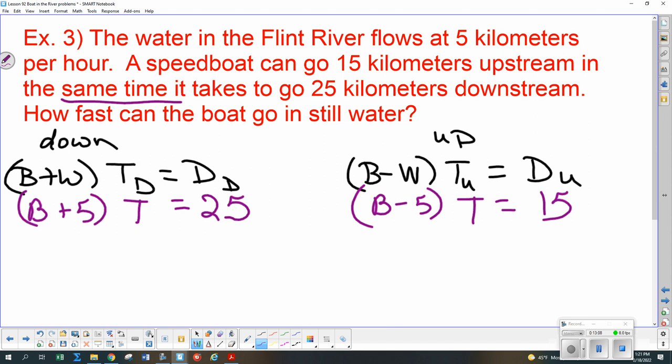What do you think we should do as the next step? Distribute. So we're going to have BT plus 5T is 25. And we're going to have BT minus 5T is 15. And I want you guys to go ahead and solve this one. Whichever way you think is best. Whatever you think you should eliminate first. And then we'll see if we all get the same thing. Catch up here.